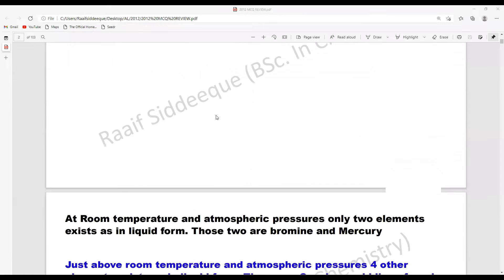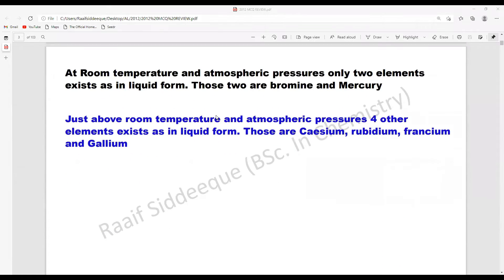But other than that, I would recommend you to know this. I will use these elements: caesium, rubidium, francium and gallium, because sometimes you might have a question like this: What are the elements that are in liquid state just above the room temperature? In that case, other than bromine and mercury, you have to take these elements as well.